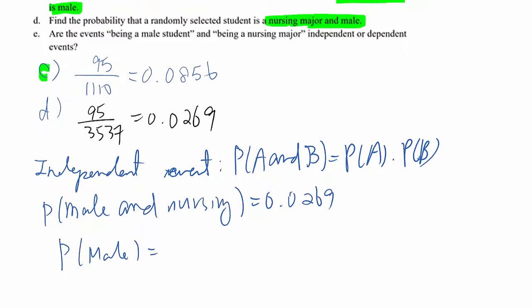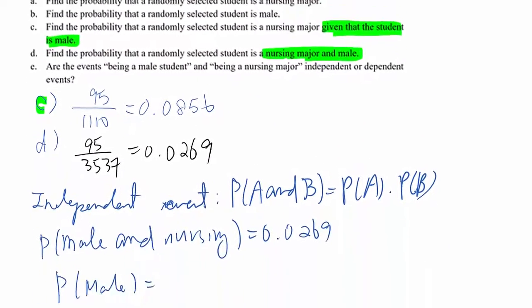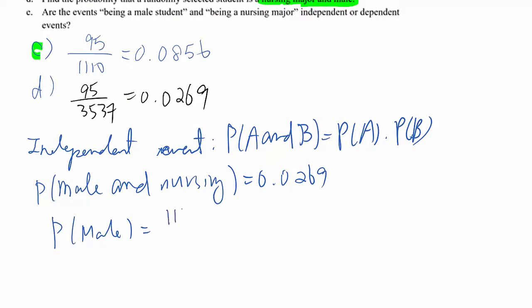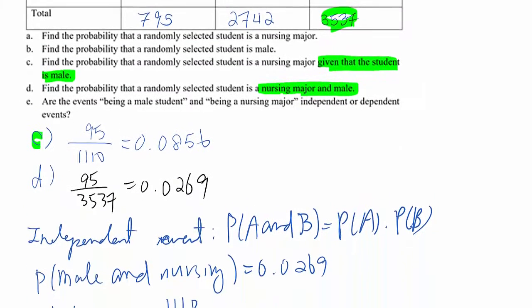Which is 1110 over 3537, and then probability nursing major equals 795 over 3537.